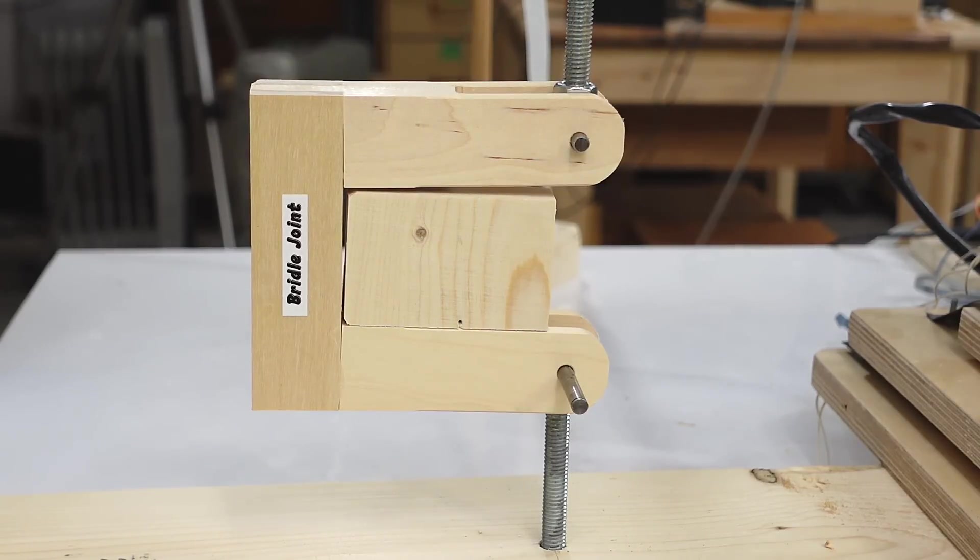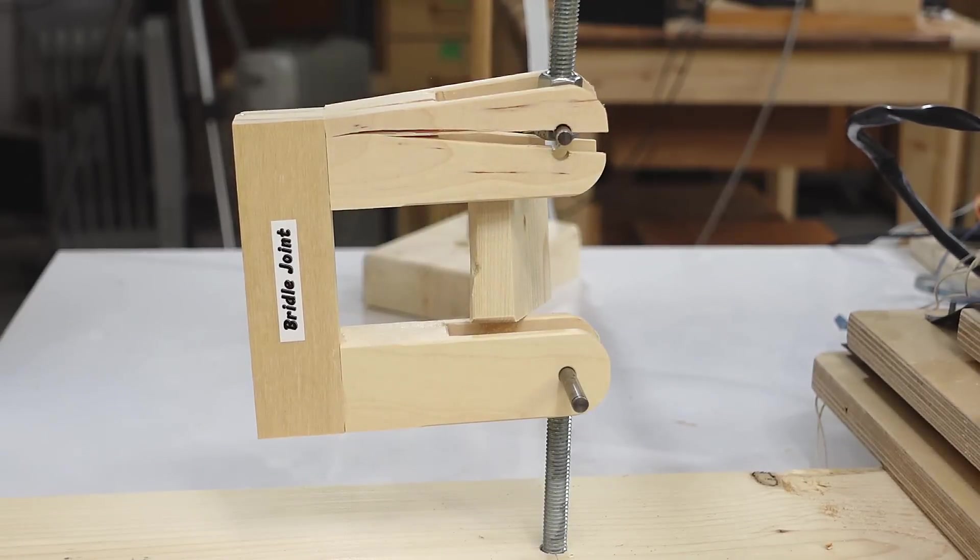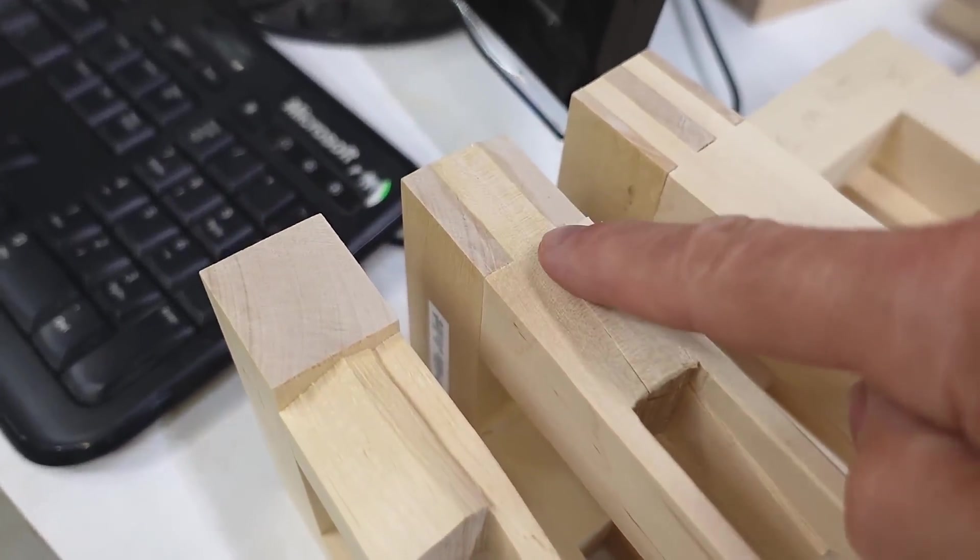And you can see it opened up quite a bit already. 120, 125. And we broke the wood again. So, that was a bridle joint.